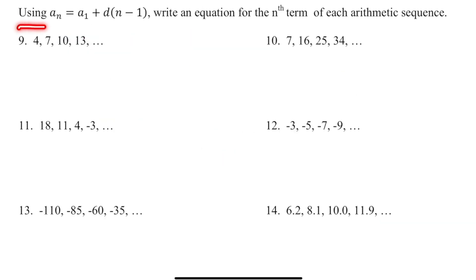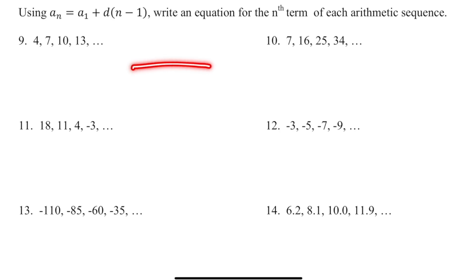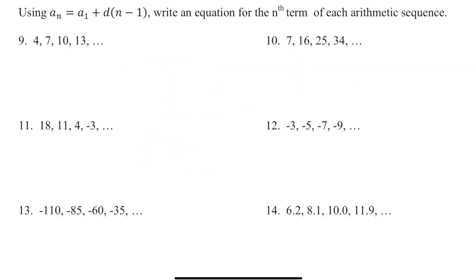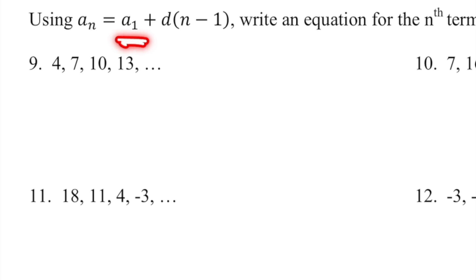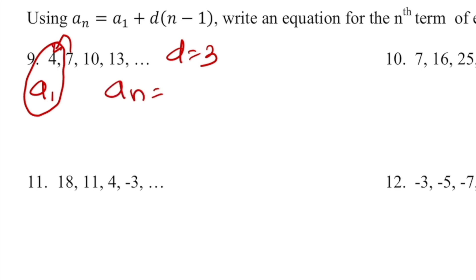For problem number nine, they're giving me the explicit formula and want the equation for the nth term, so I can plug in any value like a sub 50, a sub 70, or a sub 2000. I need to find a sub 1, my first term, and d. Seven minus four gives me three, so d equals 3 and a sub 1 equals 4. Plugging in: a sub n equals 4 plus 3 times (n minus 1). I don't replace n — I keep everything in terms of n.